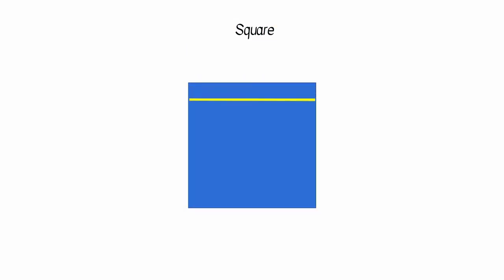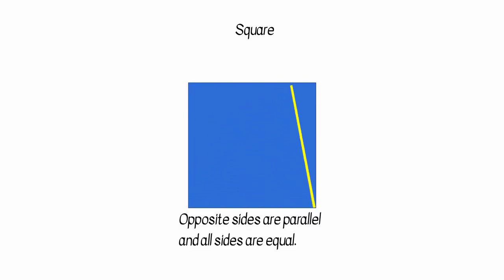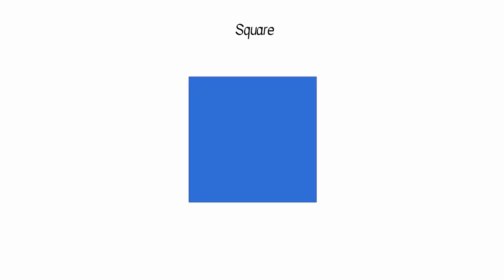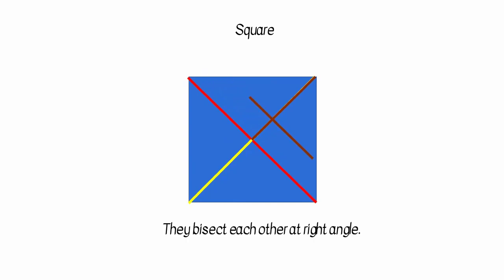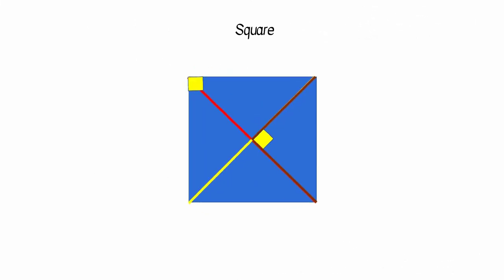In a parallelogram, if all the four sides and all the four angles become equal, what we get is a square. A square is an equilateral and equiangular parallelogram. Opposite sides are parallel and all four sides are equal. Diagonals are equal and they bisect each other at right angle. All four angles are equal — each angle will be a right angle, as we divide 360 degrees by 4.